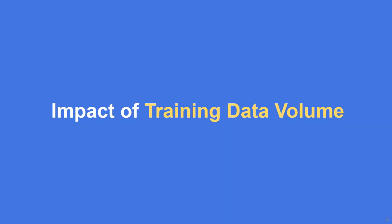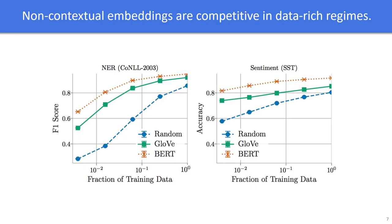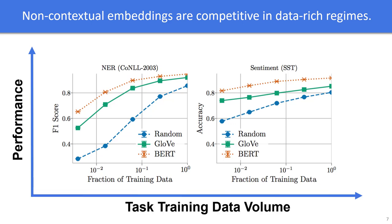We first show how the gains from using contextual embeddings depends on the amount of task training data available. In these experiments, we compare the downstream performance of the different embedding types as we vary the amount of task data used for training. We consider experiments across a range of 15 NLP tasks, including named entity recognition, sentiment analysis, and natural language understanding tasks. Here we show the results for the CoNLL-03 named entity recognition task and the Stanford Sentiment Treebank sentiment analysis task.